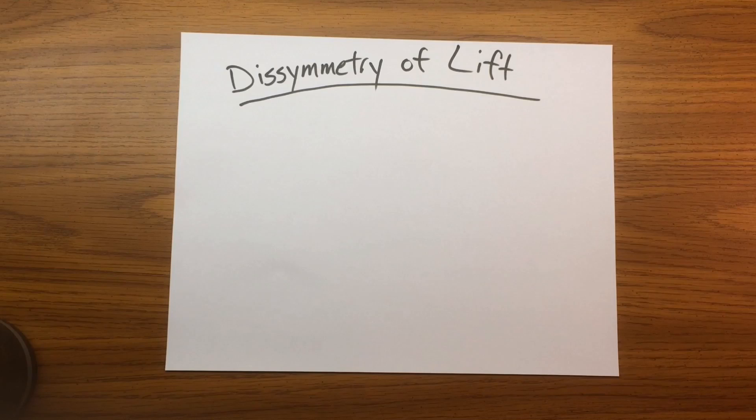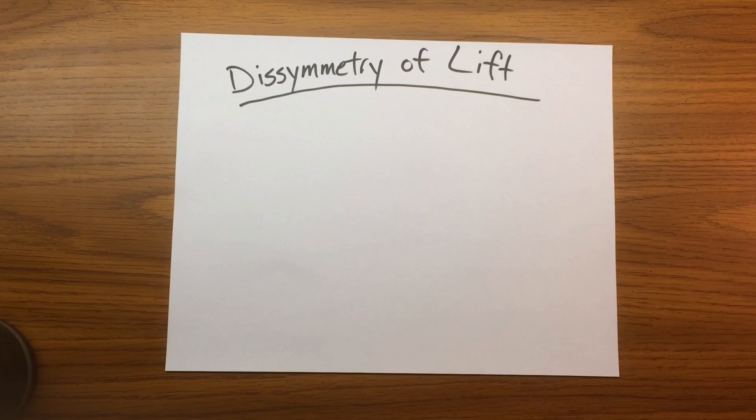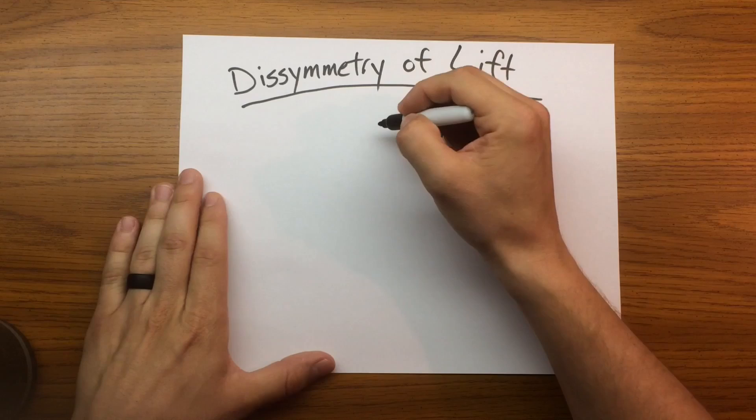So, dissymmetry of lift, what is it? It's when the helicopter moves through the air, the relative airflow through the main rotor disc is different on the advancing side than on the retreating side. The relative wind encountered by the advancing blade is increased by the forward speed of the helicopter, while the relative wind speed acting on the retreating blade is reduced by the helicopter's forward airspeed. Therefore, as a result of the relative wind speed, the advancing blade side of the rotor disc produces more lift than the retreating blade. That is dissymmetry of lift. There is dissymmetry in the lifting parts of the helicopter. So let's show what that means.